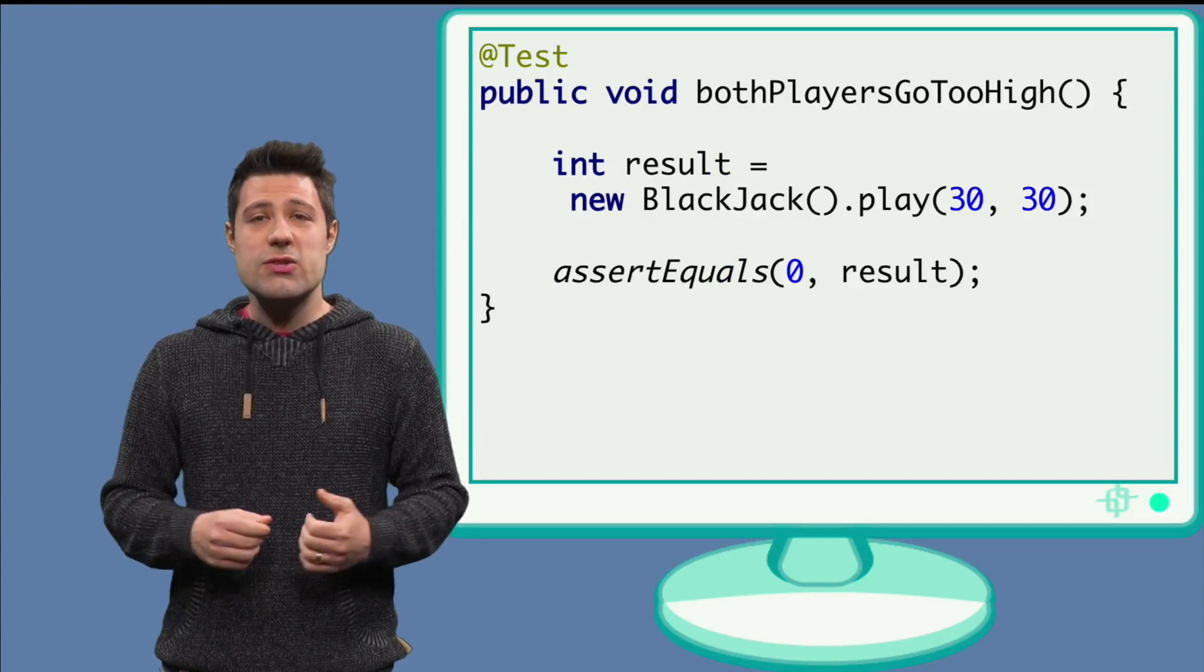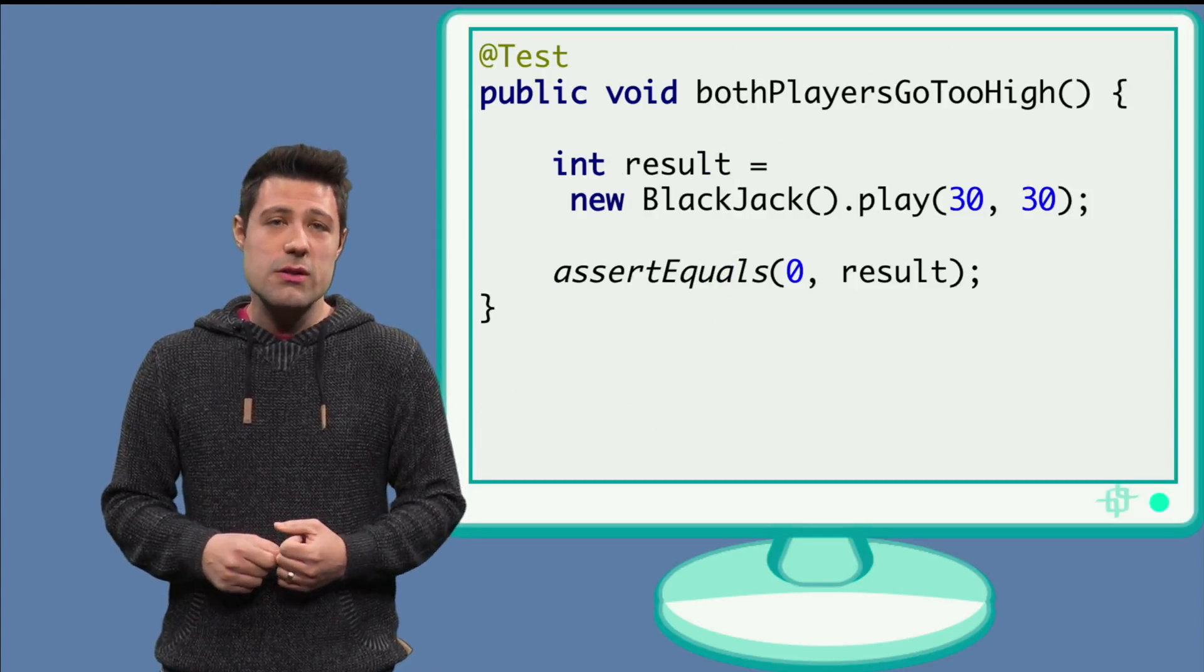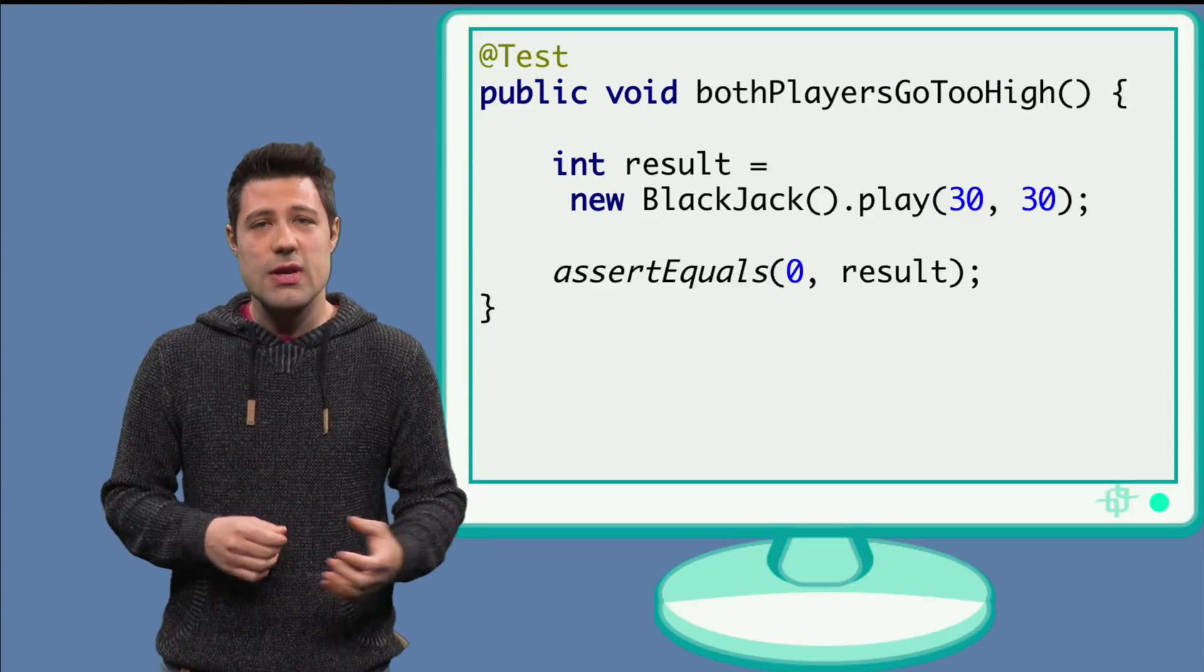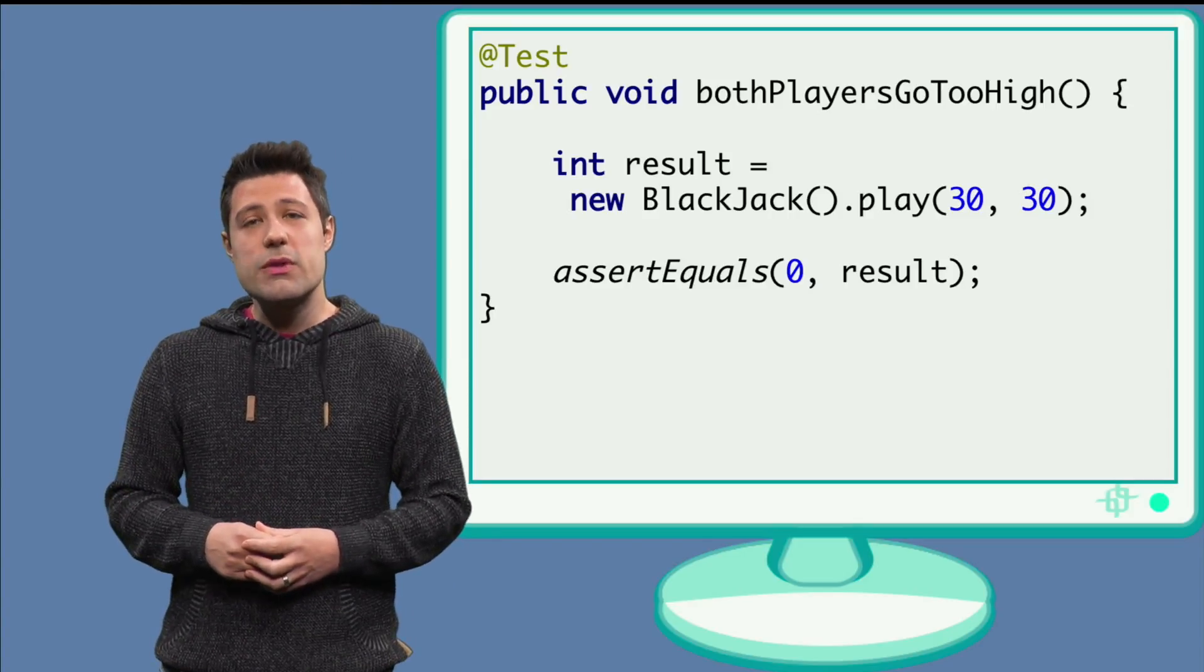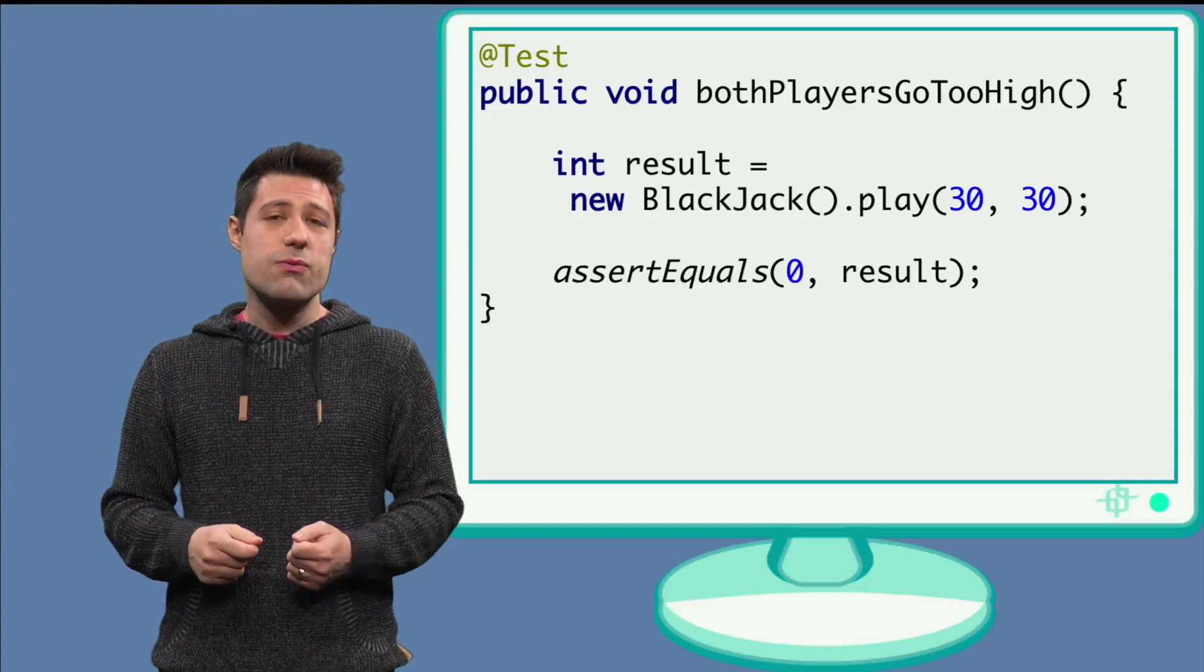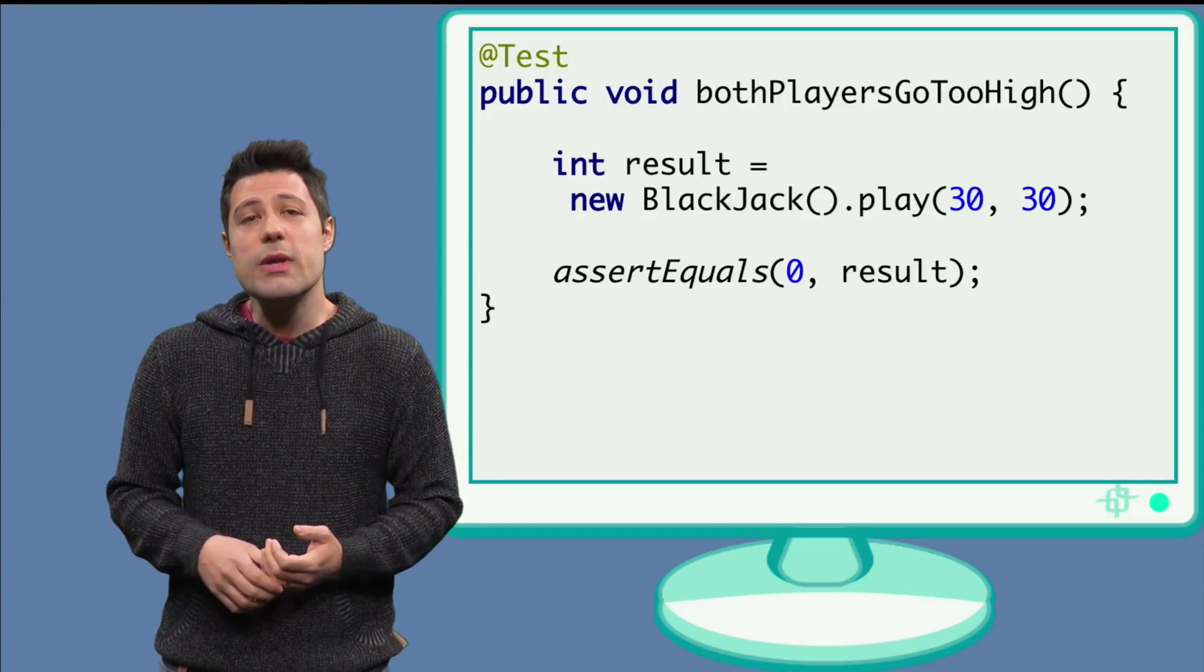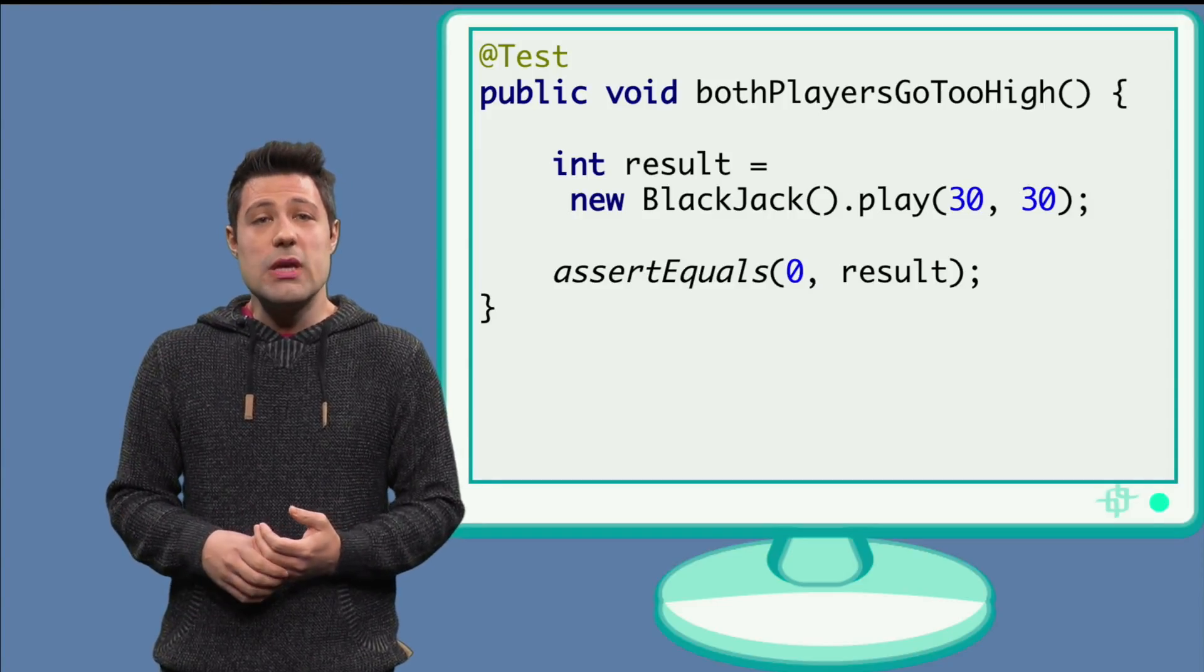In the blackjack test class, we create a test method, which creates a blackjack class and invokes the play method, with two higher than 21 numbers, for example, 30. We then expect the result to be equals to zero.